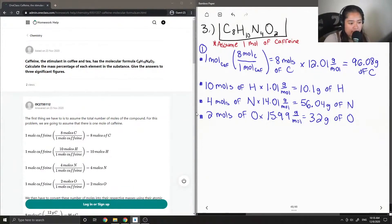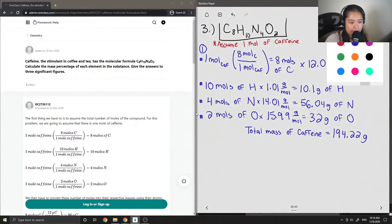So if we add all these values up, we can get the total mass of 1 mole of caffeine. Okay, so adding them all up, you end up getting 194.22 grams. I'm going to put this in a box.